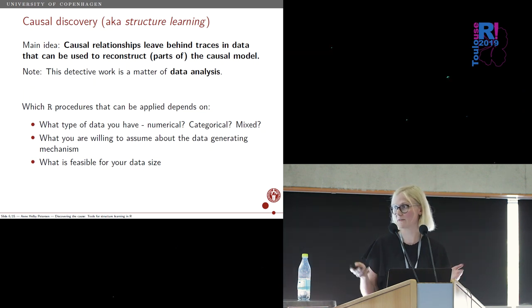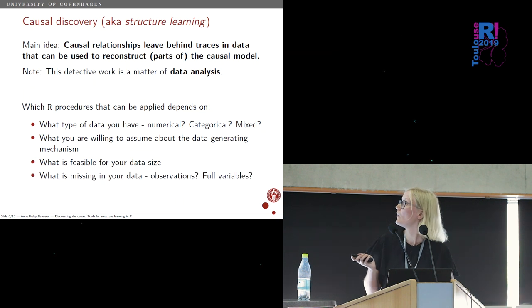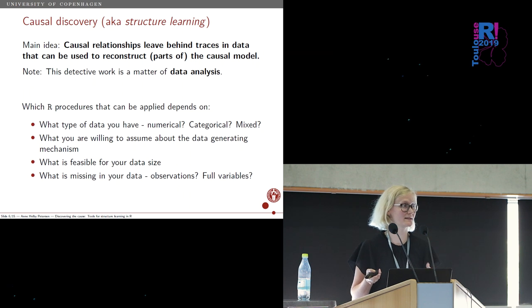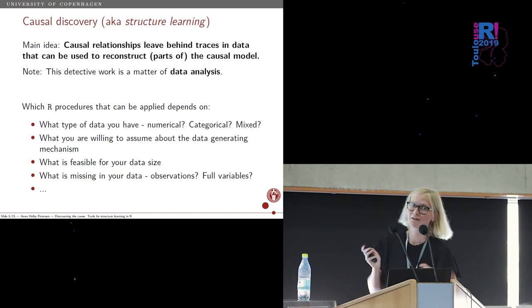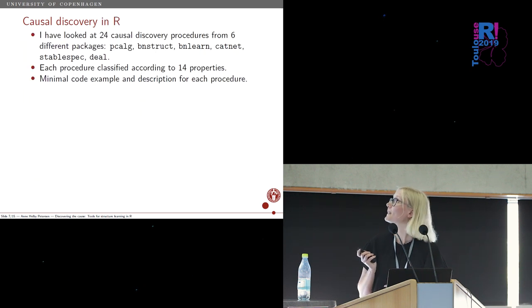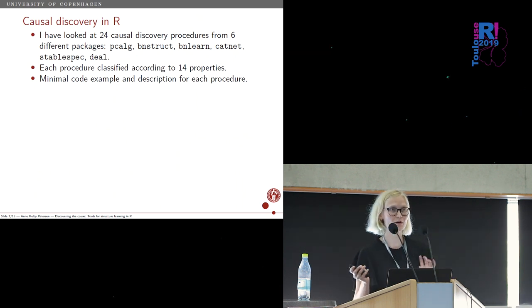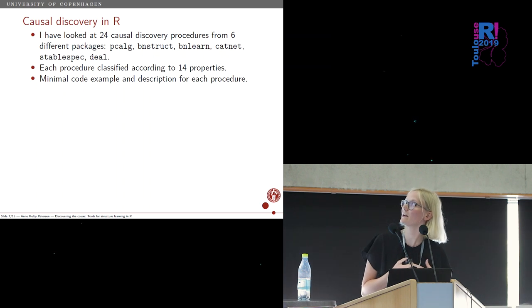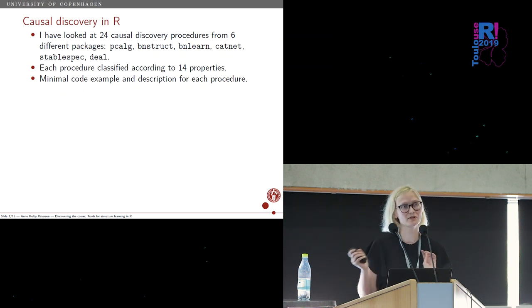It also depends on what you're willing to assume about your data—functional form, distributions, linearity, all these kinds of things. It also depends on your data size. Maybe if you have a lot of data, you need methods that run faster. Or also what is missing in your data, either the usual kind of missingness or full variables being missing, latent variable problems. So what I've been doing is to look at a lot of different methods in R. I looked at 24 different procedures from six packages, very nice packages, all of them available on CRAN.